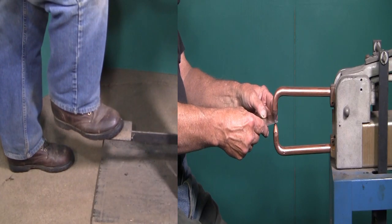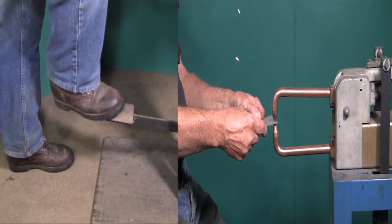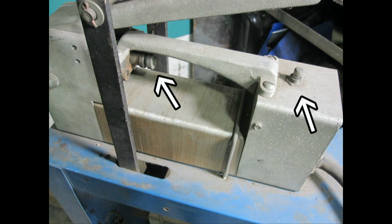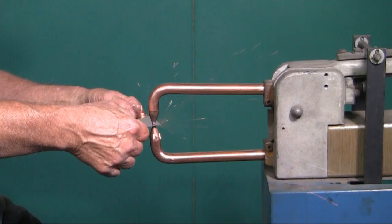My spot welder is on a stand with a foot pedal. The left arrow is for the metal thickness adjustment and the right arrow is the on-off switch. When the arm connects to the switch, current is passed through the arms and the spot welder tips.